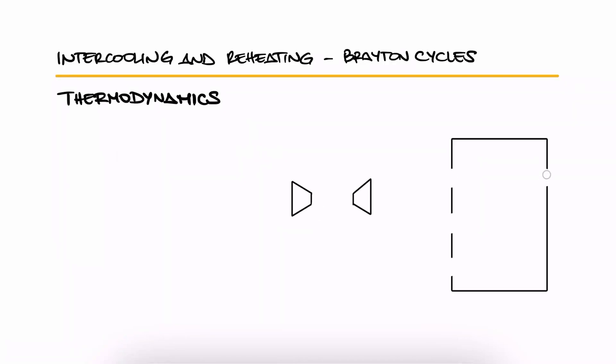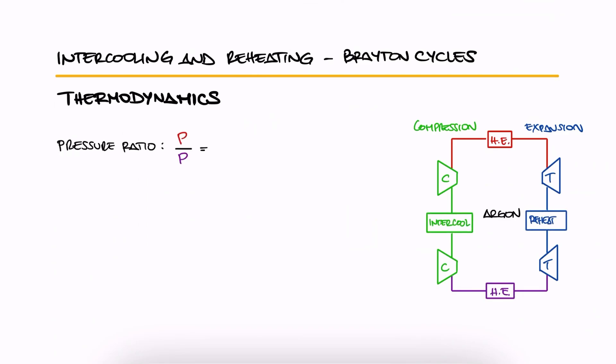An argon turbine power plant with two stages of compression and two stages of expansion has an overall pressure ratio of 16. The argon enters each stage of the compressor at 350 Kelvin and each stage of the turbine at 1300 Kelvin. What is the minimum mass flow rate of argon needed to develop a net power output of 80 megawatts?